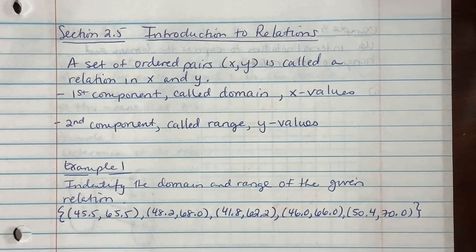Section 2.5 Introduction to Relations. A set of ordered pairs (x, y) is called a relation in x and y. The first component, called the domain, are your x values. The second component, called the range, are your y values.